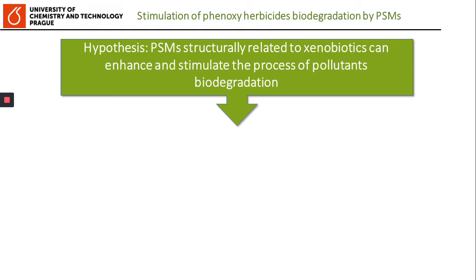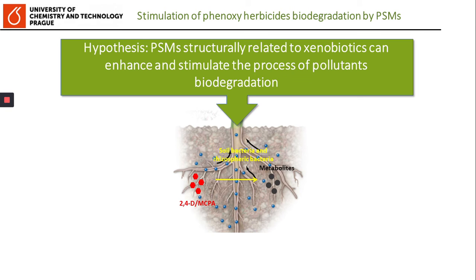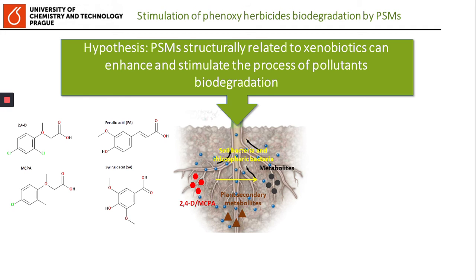We hypothesized that plant secondary metabolites structurally similar to xenobiotics can enhance or stimulate the process of pollutant biodegradation. To test this hypothesis, we selected two pairs of herbicide and plant secondary metabolites having similar chemical structure: 2,4-D and ferulic acid, and MCPA and syringic acid.